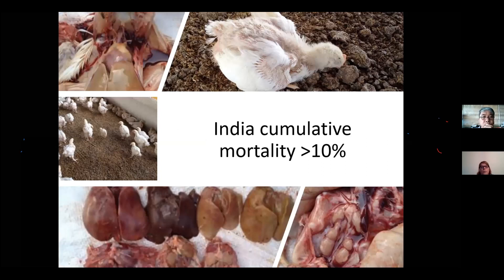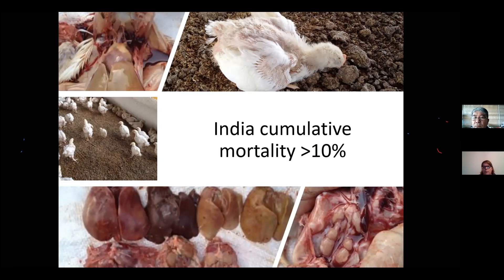This is a case from India where inclusion body hepatitis was diagnosed. The flock showed cumulative mortality of a little more than 10%. You can see the affected livers — large, friable, with a yellowish color. Also, looking at the birds, you can really see they are depressed. These signs can all point in the direction of fowl adenovirus, although they are not exclusively caused by adenovirus.